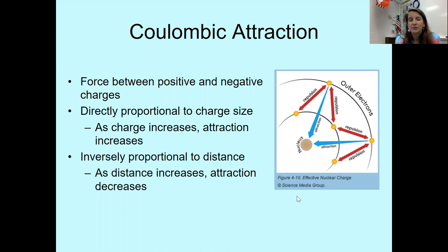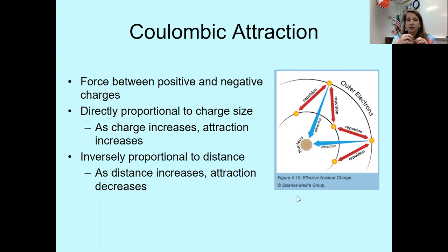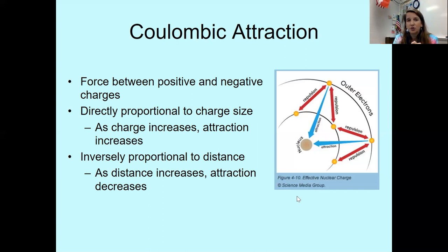Coulombic attraction is going to be inversely proportional to the distance. With the positive nucleus and the negative electron, when they're close together, that attraction is great. Once you start to put more distance between them, the attractive force gets weaker and weaker. Coulombic attraction is directly proportional to the charge size — as the charge increases, the attraction increases. But it's inversely proportional to the distance, meaning one increases and the other decreases.